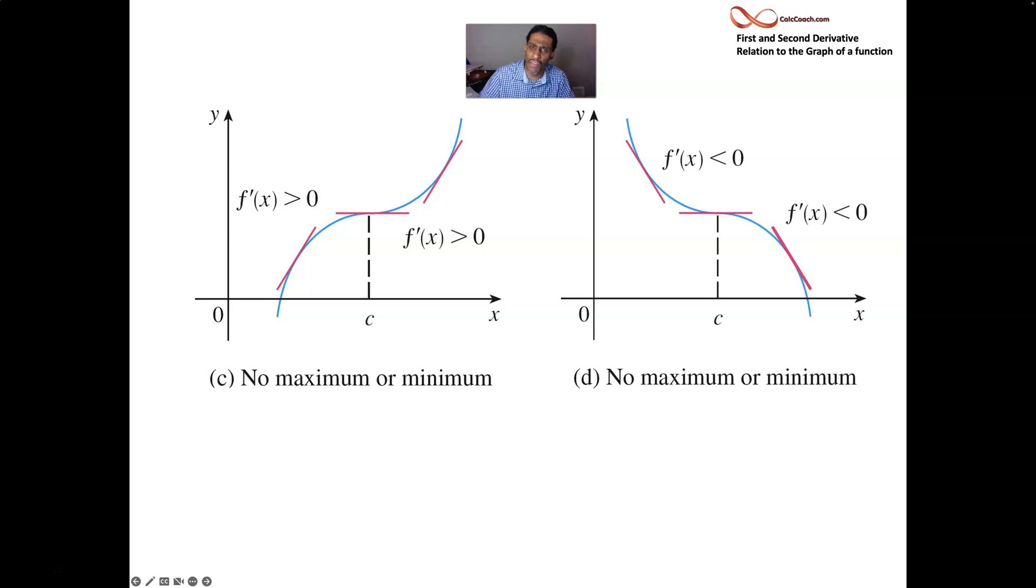But it could happen the other way too. A function could be decreasing, have a zero tangent line, and go back to being decreasing again. So it's not a guarantee that you'll have a local max or local min where your derivative is equal to zero. You must check the signs. So let's go do that.